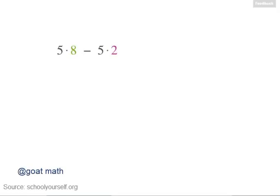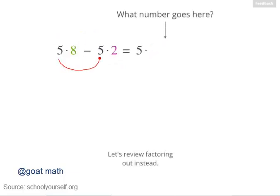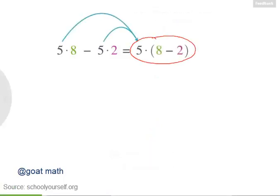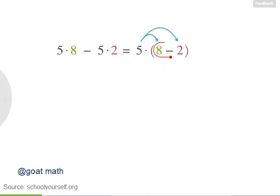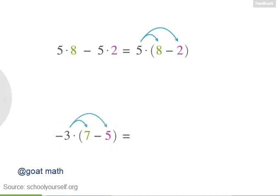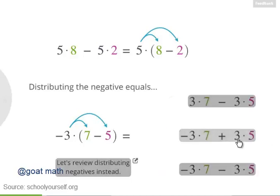Let's start with a factoring example. If you have 5 times 8 minus 5 times 2, this equals 5 times another number. Try factoring out the 5 to determine this missing number. Exactly right, so you can factor out the 5, giving you 5 times (8 minus 2), which is 6. Why does factoring out even work? Because it's the same thing as the distributive law, but working backwards. The distributive law says when you have an expression like this, you can distribute the factor of 5 onto the numbers being added or subtracted inside the parentheses.